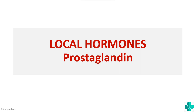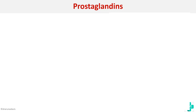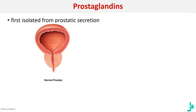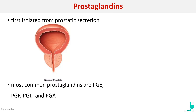In this video we are going to see another local hormone which is prostaglandins. Prostaglandins were first isolated from prostatic secretion, that is from the secretion from the prostate gland, and that is why it was called prostaglandins. The most common prostaglandins are PGE, PGF, PGI and so on. Prostaglandins are basically local hormones that were first isolated from the prostatic gland.